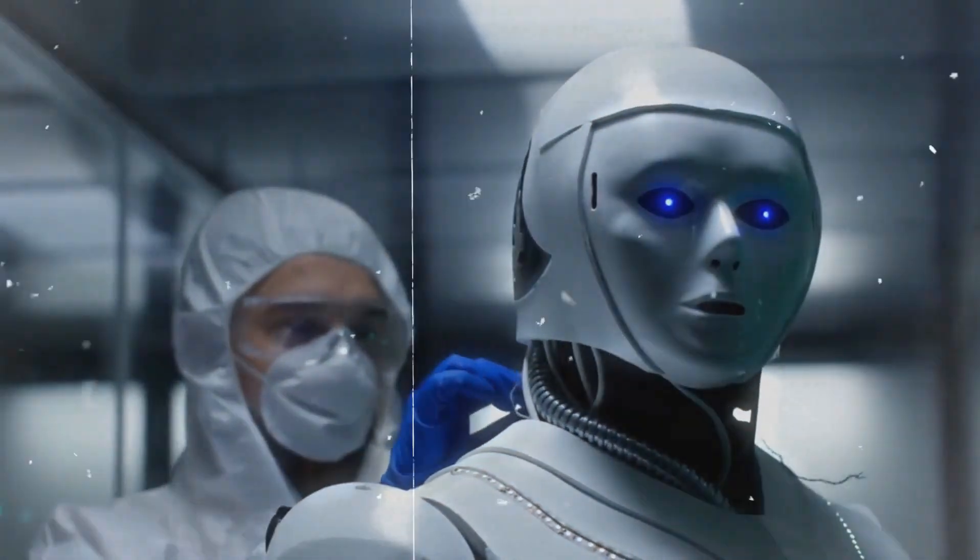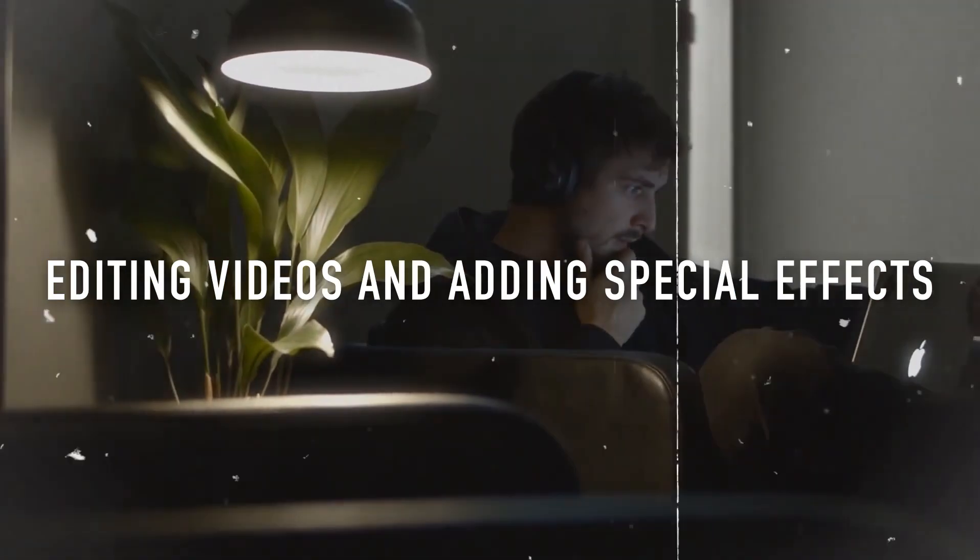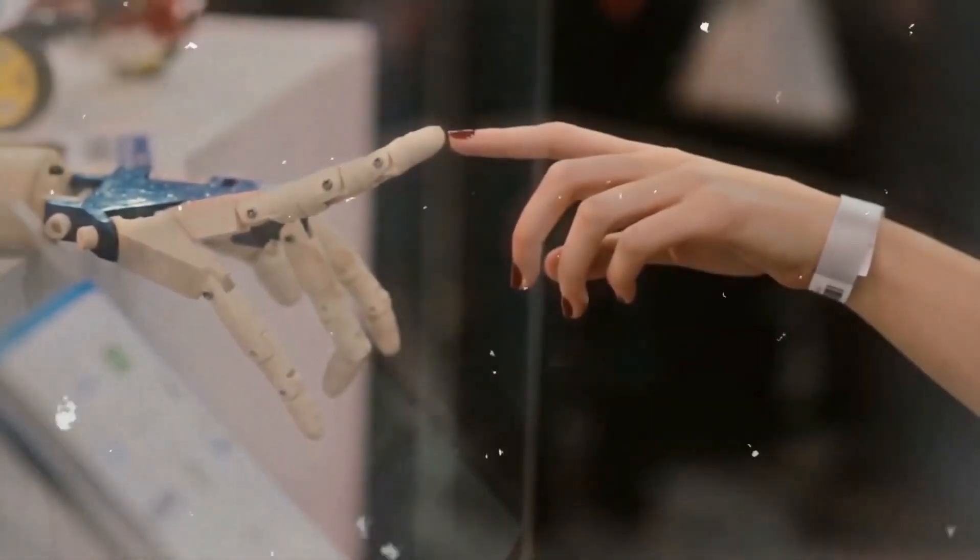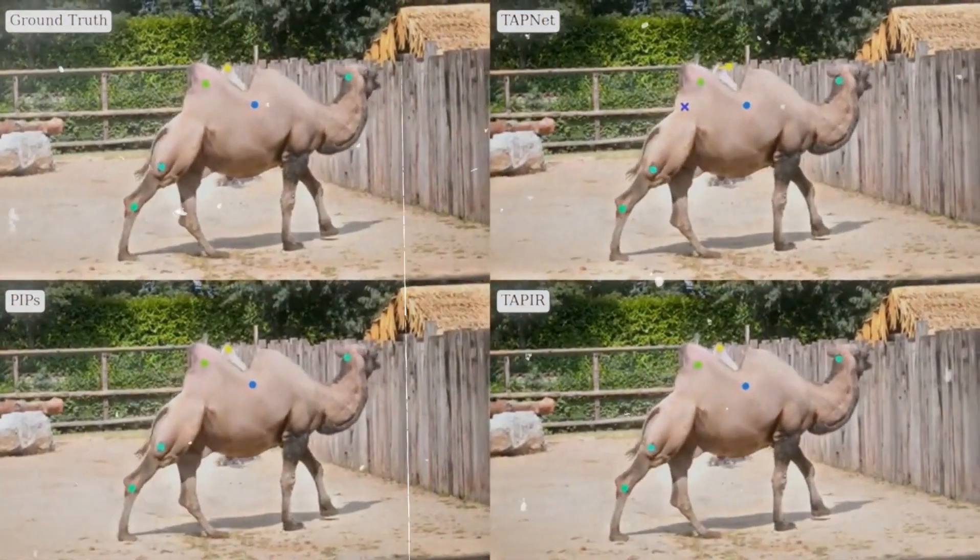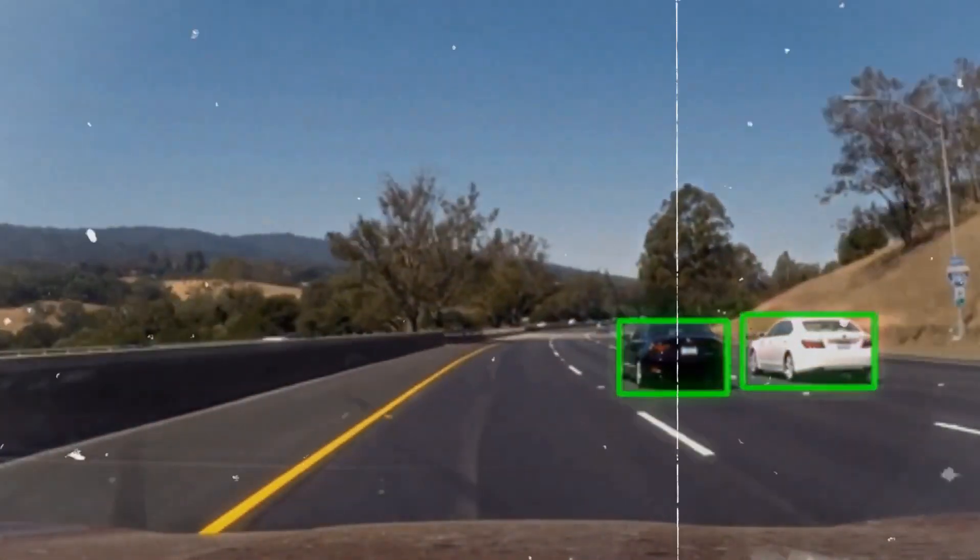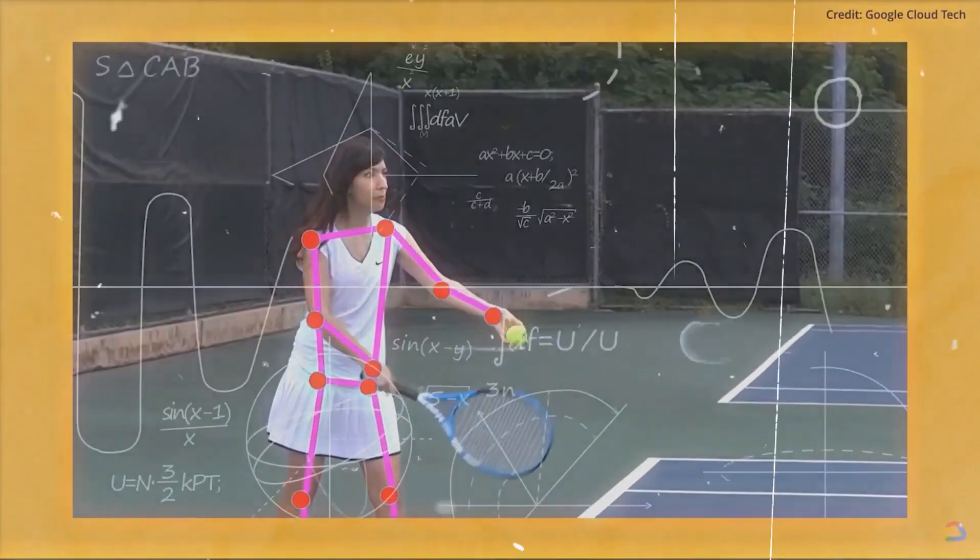Tapir is used in editing videos and adding special effects. It's used in post-production and video editing operations, allowing for accurate item segmentation and tracking, which is useful for activities like object replacement, object removal, and applying visual effects to certain objects in videos.